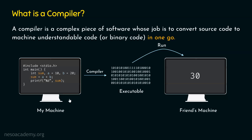Recall that we assumed this is my machine and this is my friend's machine. In my machine, I have written code in C programming language and provided it to the compiler. Compiler in return generated an executable which we can run on any machine, because this is machine-understandable code. I can provide this code to my friend and my friend is able to run it and see output 30. Compiler translates source code to machine code in one go.